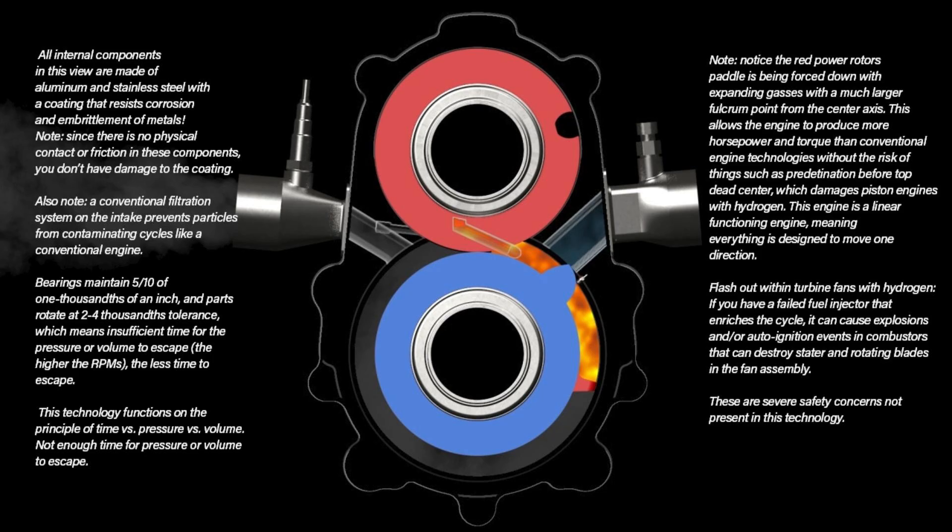Bearings maintain five-tenths of one-thousandths of an inch and parts rotate at two to four-thousandths tolerance, which means insufficient time for the pressure or volume to escape. The higher the RPMs, the less time to escape. This technology functions on the principle of time versus pressure versus volume. Not enough time for pressure or volume to escape.